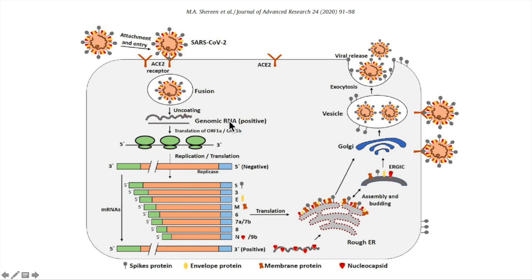The virus then releases its RNA into the host cell. This genome RNA is translated into viral replicase polyproteins PP1A and 1AB, which are then cleaved into small products by viral proteinases. The polymerase produces a series of subgenomic mRNAs by discontinuous transcription and finally translated into relevant viral proteins. These viral proteins and genome RNA are then subsequently assembled into virions in the ER and in the Golgi, which are then transported via vesicles and released out of the cell where they can go and infect other cells with ACE2 receptors.